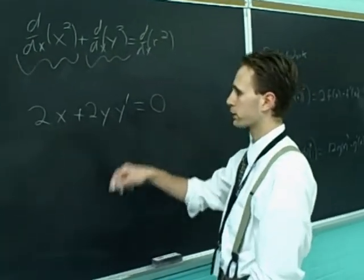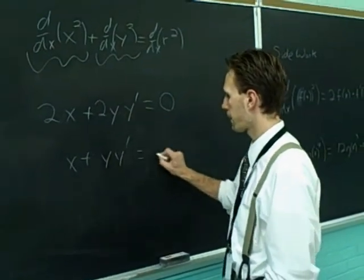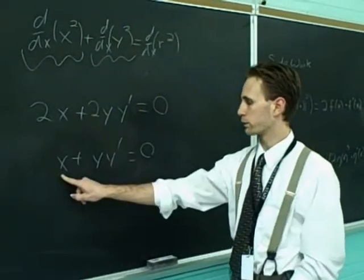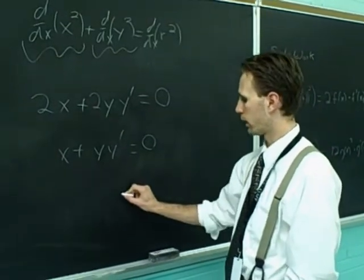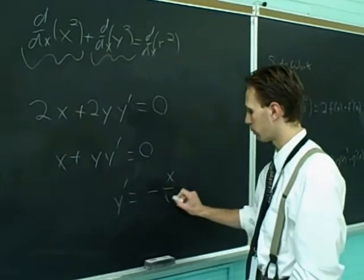So this is what we have. And we can isolate dy dx. So you divide by 2, and then bring the x over and divide by y.